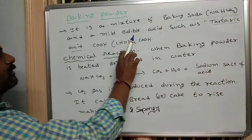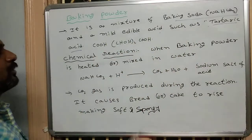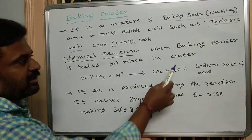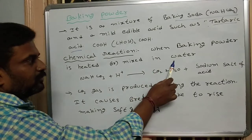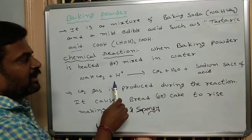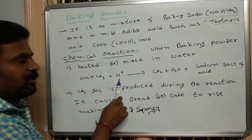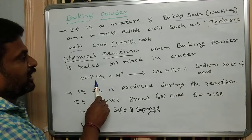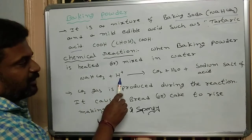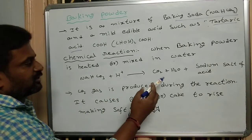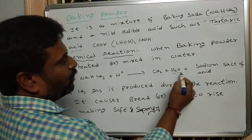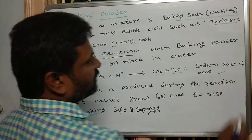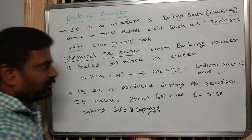When baking powder is heated or mixed in water, a chemical reaction takes place: NaHCO₃ + H⁺ → carbon dioxide gas + water + sodium salt of the acid.